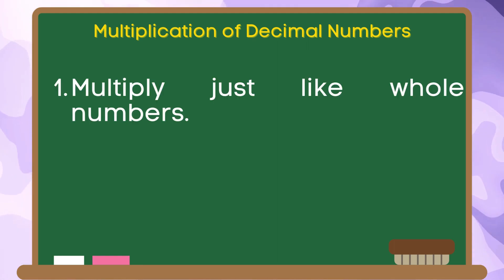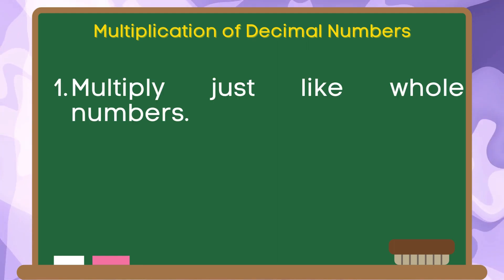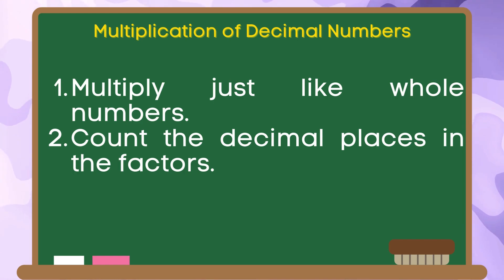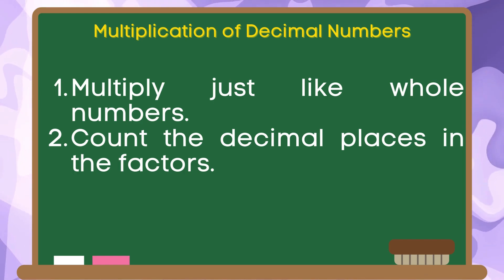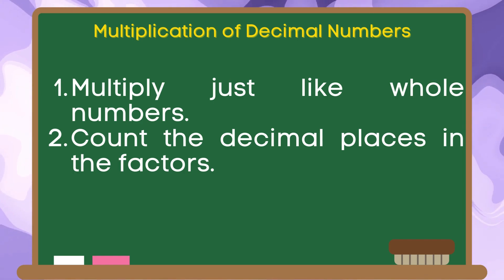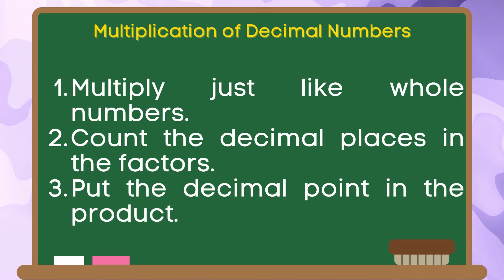First, multiply just like whole numbers. Second, count the decimal places in the factors. And third, put the decimal point in the product.